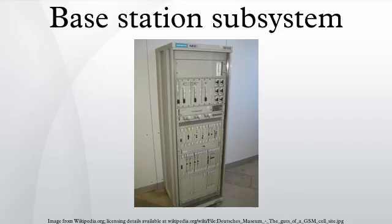The base station subsystem is the section of a traditional cellular telephone network which is responsible for handling traffic and signaling between a mobile phone and the network switching subsystem. The BSS carries out transcoding of speech channels, allocation of radio channels to mobile phones, paging, transmission and reception over the air interface, and many other tasks related to the radio network.